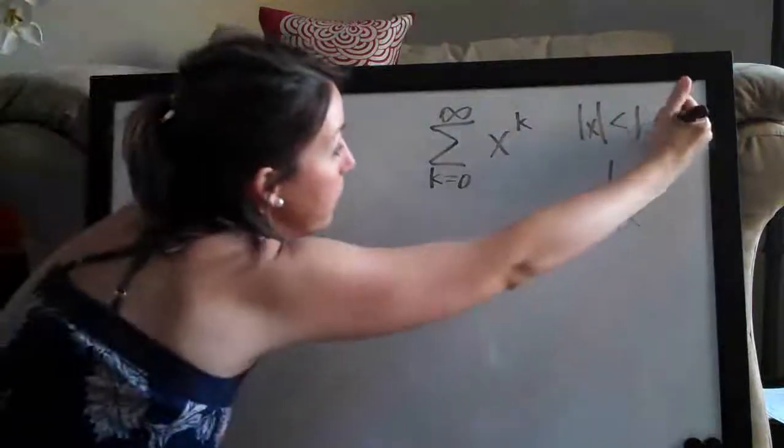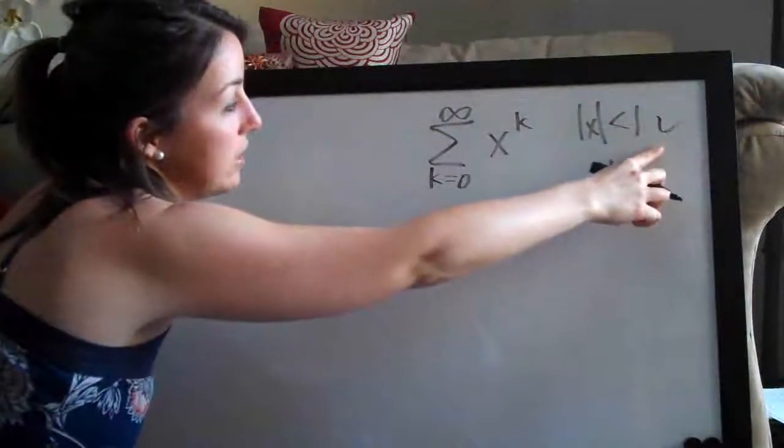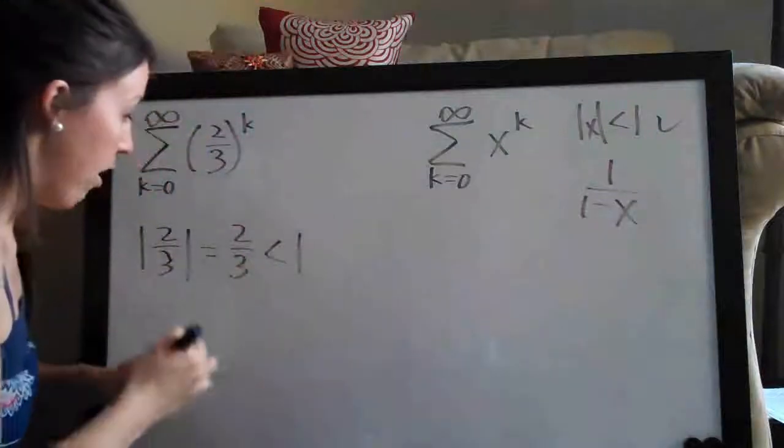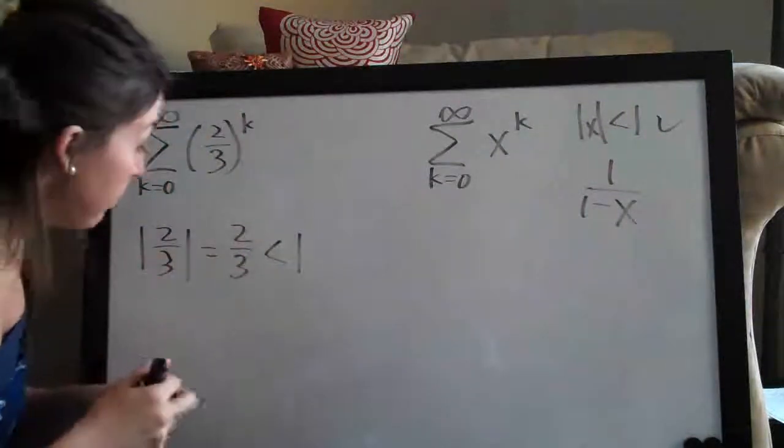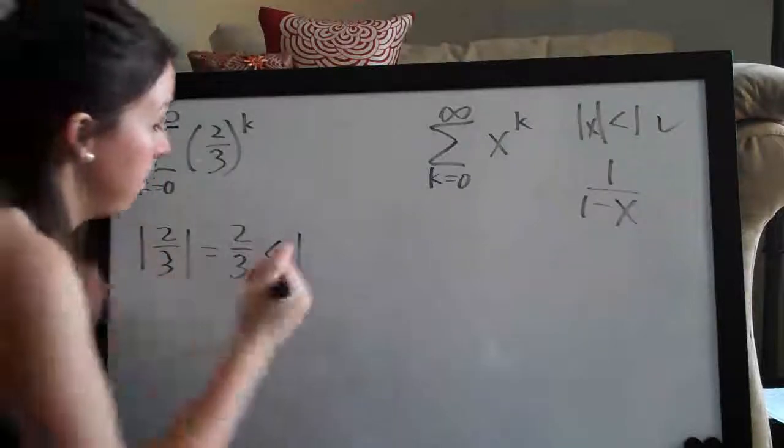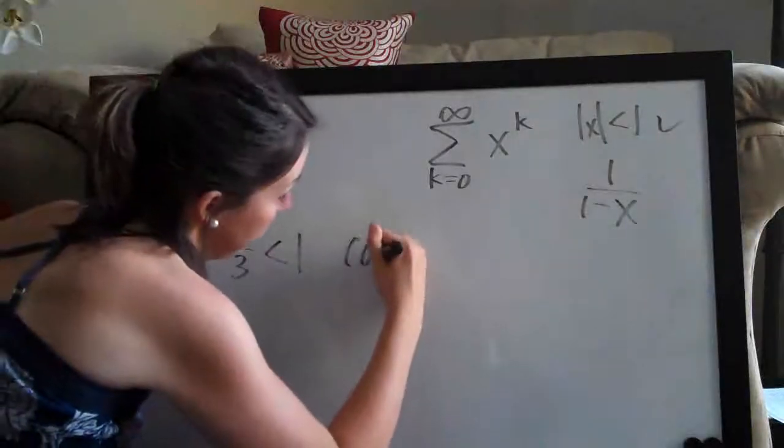But the absolute value of x in our case is just two-thirds and two-thirds is less than one. So yes, that meets this criterion. So in that case, our series does converge. So that's one-half of our answer.